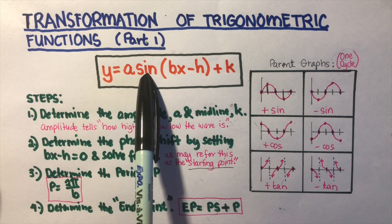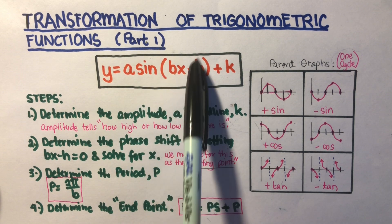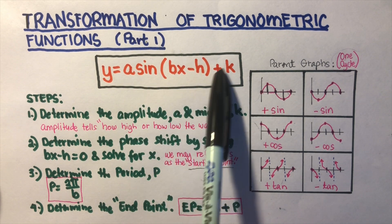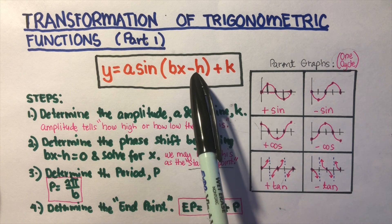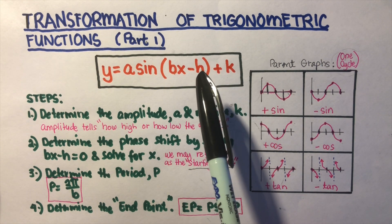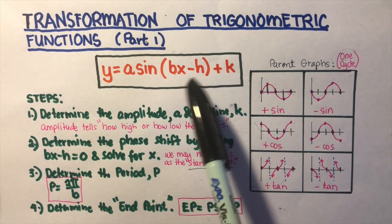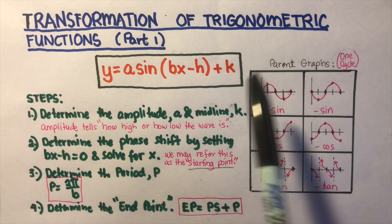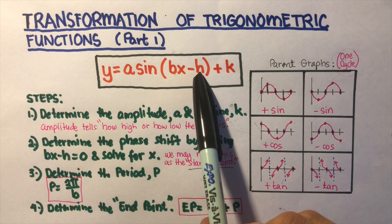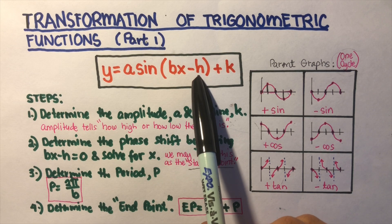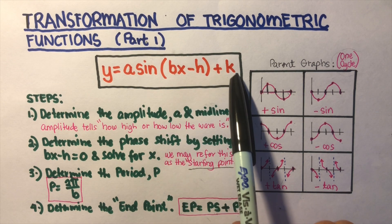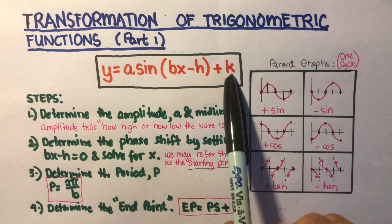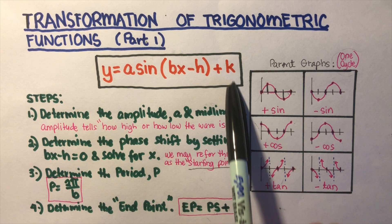So there's A sine, and then there's parentheses, and then h and k. H and k have been talked about in our class before. H refers to the movement of the graph left and right, and k is the movement of the graph up and down.